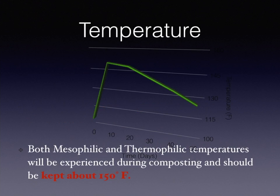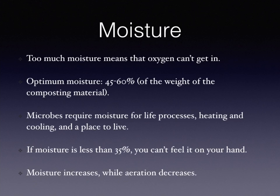Both mesophilic and thermophilic temperatures will be experienced during composting and should be kept around 150°F. Too much moisture means oxygen can't get in. Optimum moisture is 45 to 60% of the weight of the composting material. Microbes require moisture for life processes, heating and cooling, and a place to live. If moisture is less than 35%, you can't feel it on your hand — squeezing a small handful of compost is the standard measure. If you can see the moisture, it is at least 35%. Moisture increases while aeration decreases.